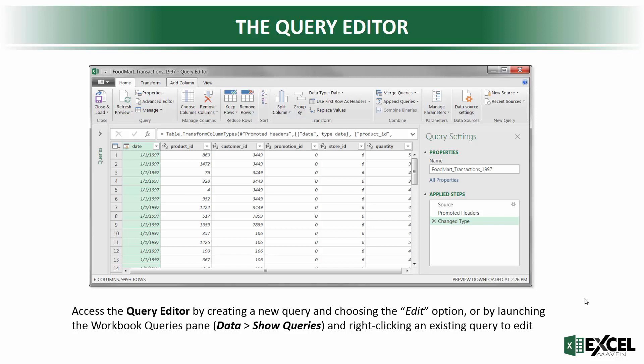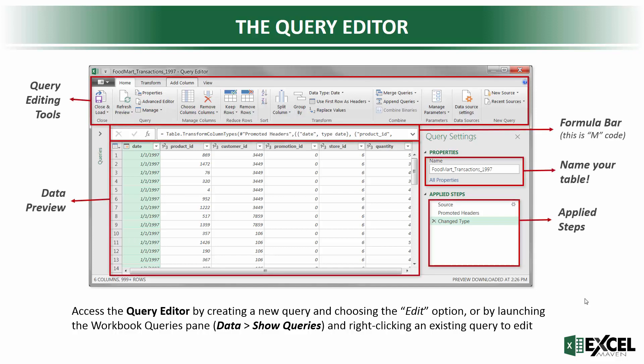There are a few components to this window that I'd like to break down. Up at the top, you've got your Query Editing tools. These live in a number of tabs: Home, Transform, and Add Column. We're going to break each of those down in the next slide, but basically this is where all of those data transformation and shaping tools live.